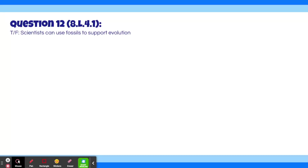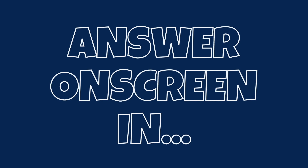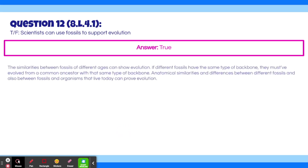Last question, Question 12. True or false: scientists can use fossils to support evolution? The answer is true. The similarities between fossils of different ages can show evolution. If different fossils have the same type of backbone, they must have evolved from a common ancestor with that type of backbone. Anatomical similarities and differences between different fossils and currently existing organisms can also prove evolution.